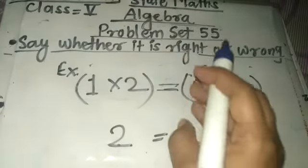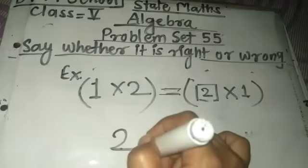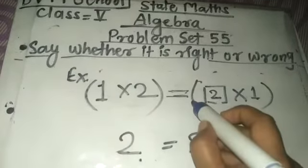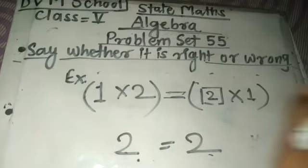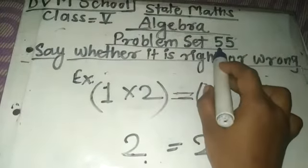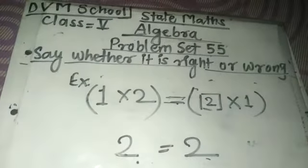You have to do like this, means equality tak aapko ana hai. Whether it is equal or not equal, you have to do the method first of all and write down whether it is right or wrong. These type of examples, these type of problems are given in Problem Set 55. Solve this. Thank you.